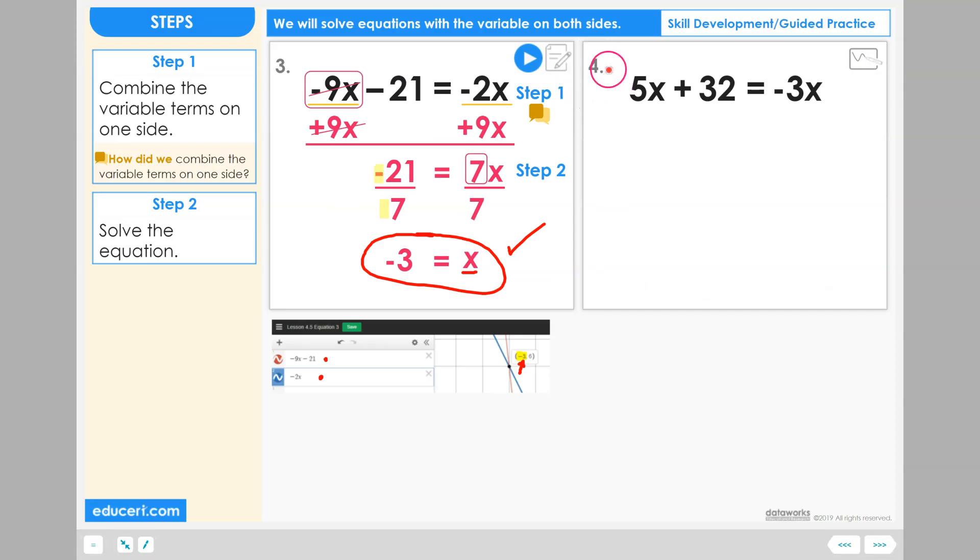You are now ready to solve equation number 4 with the variable on both sides. And once again, like the previous problem, when you get to the end, there will be a Desmos picture with a link that will send you to a graph with both expressions so that you can check your answer as well.